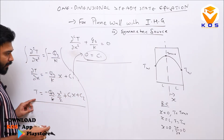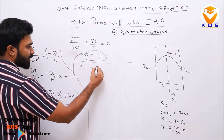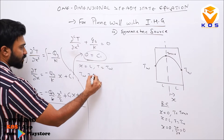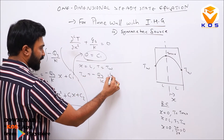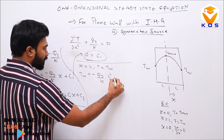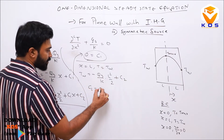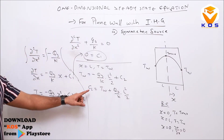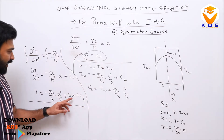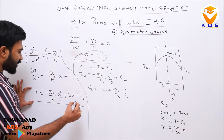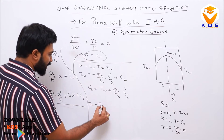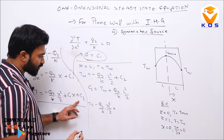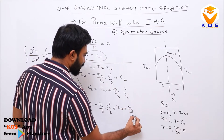With C1 = 0, applying the boundary condition T = T_w at x = L gives C2 = T_w + qg/(2k) · L². Substituting both constants, T = −qg/k · x²/2 + T_w + qg/(2k) · L².